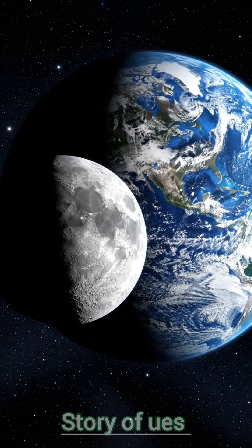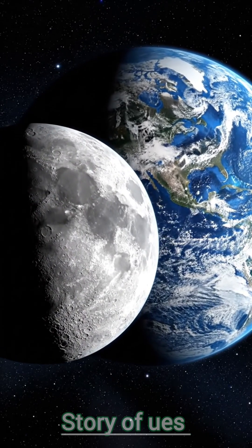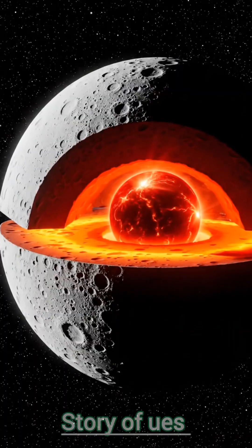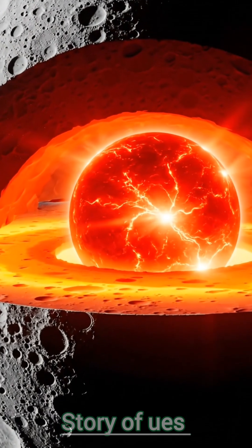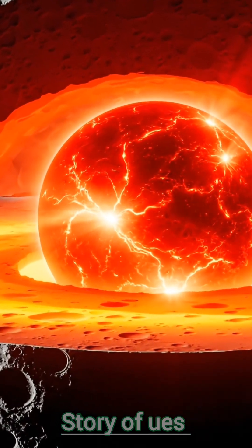Its mass is approximately 7.34 times 10 to the power of 22 kilograms, much less than Earth. Gravity is about one-fourth of Earth. The Moon's interior is composed of a partially molten inner core, a mantle in the middle layer, and an outer crust.